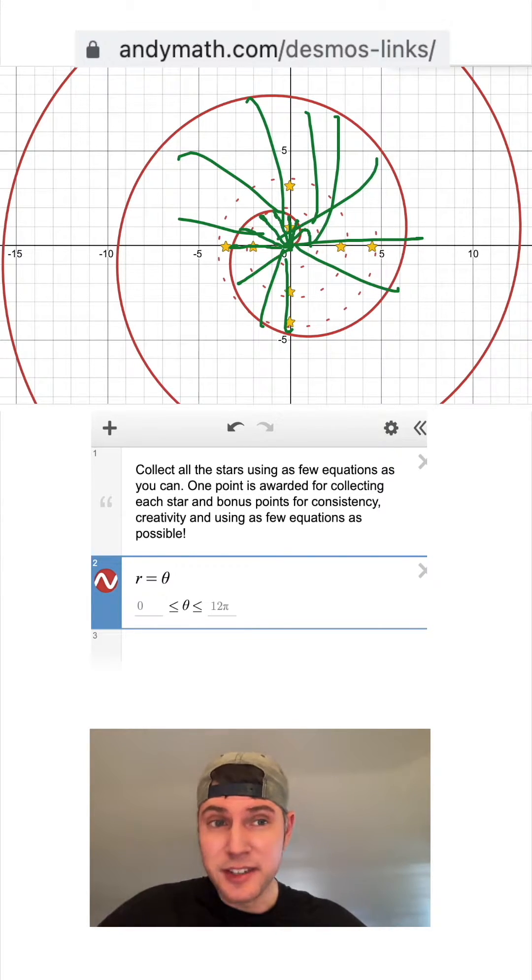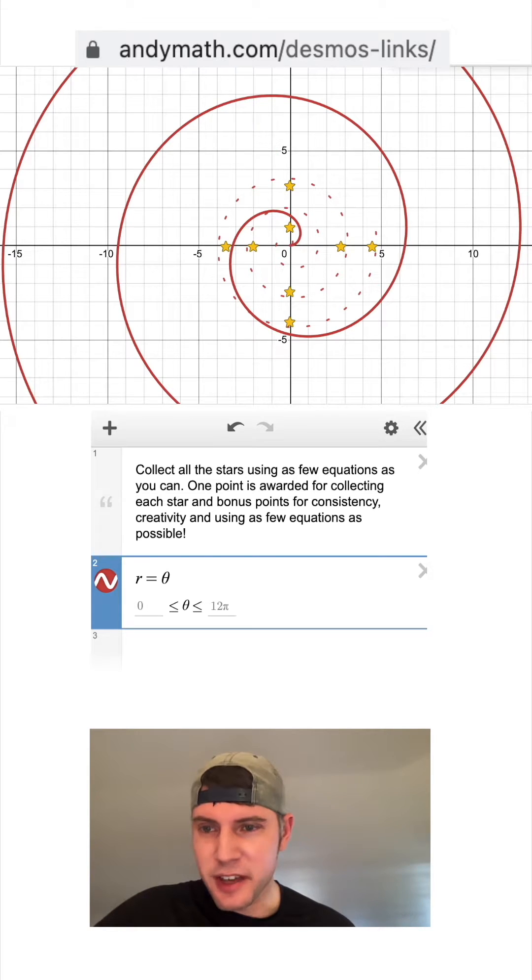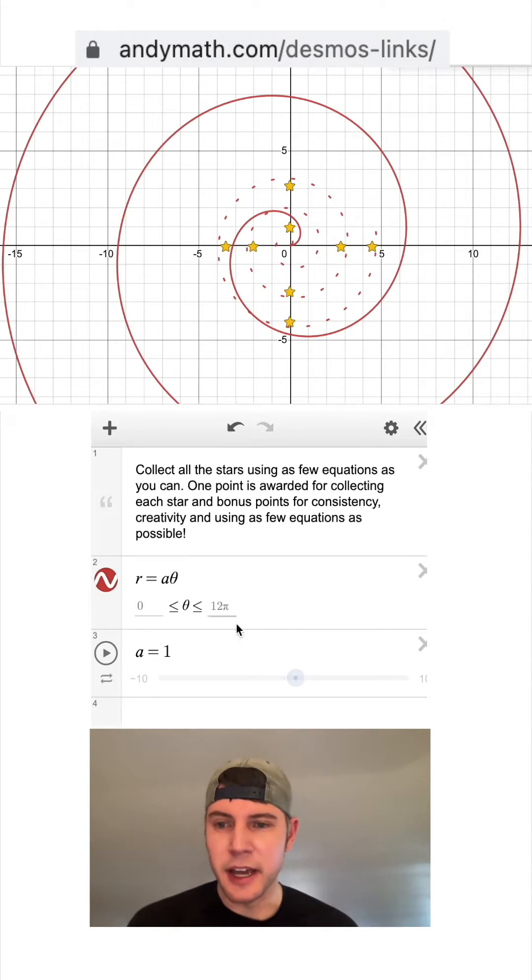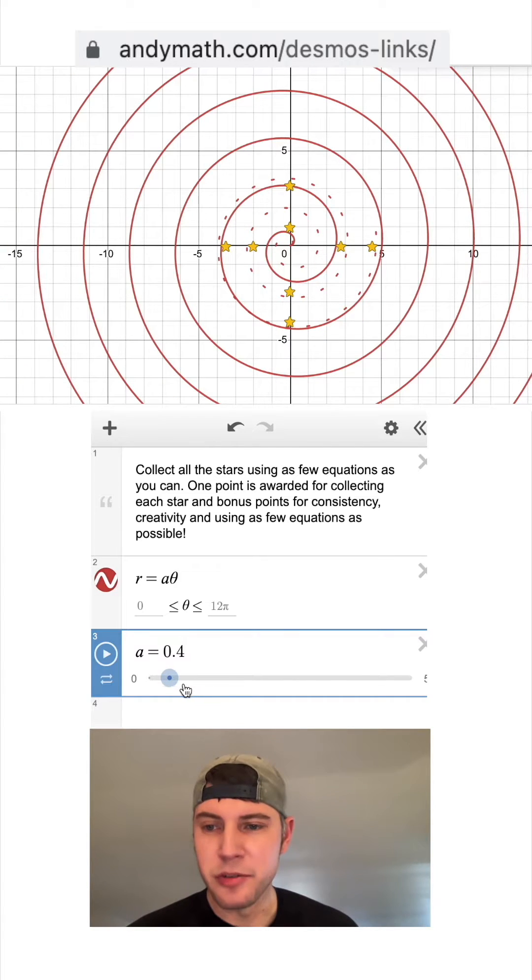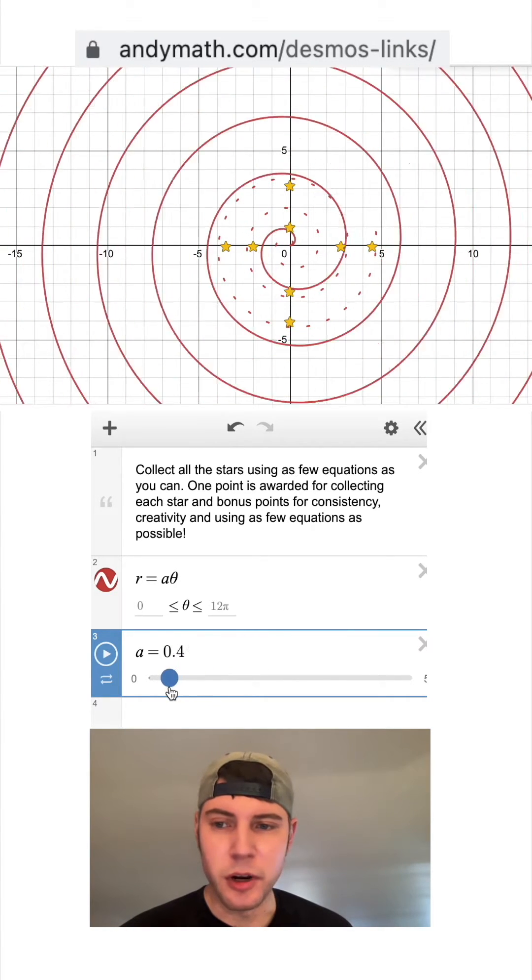The spiral that I just made is different than theirs. So we can fix that by throwing a multiplier in front of the theta and we can just make it an A and now we can slide it. Now when we drag it, we can really clearly see it grow or shrink.